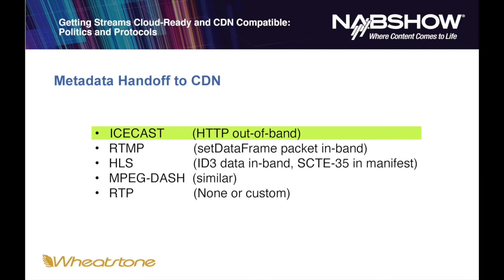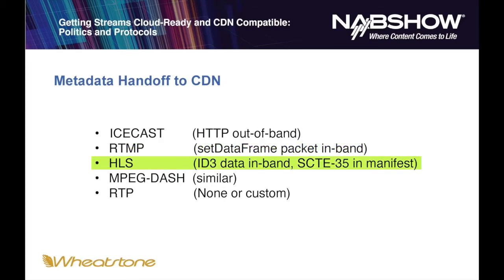Every CDN is going to have their own requirements for how the metadata is to be formatted — that's the purpose of the transform filter. Metadata is handed off to the CDN in various methods. With IceCast, it's normally transmitted as a separate HTTP message out of band — not part of the audio stream going up to the IceCast server. With RTMP, the metadata is actually embedded into the audio stream in a separate packet called a set data frame packet. With HLS, the metadata can be embedded in-band in the stream itself in the form of ID3 tags, or embedded in the manifest file as a SCTE-35 message for ad replacement.